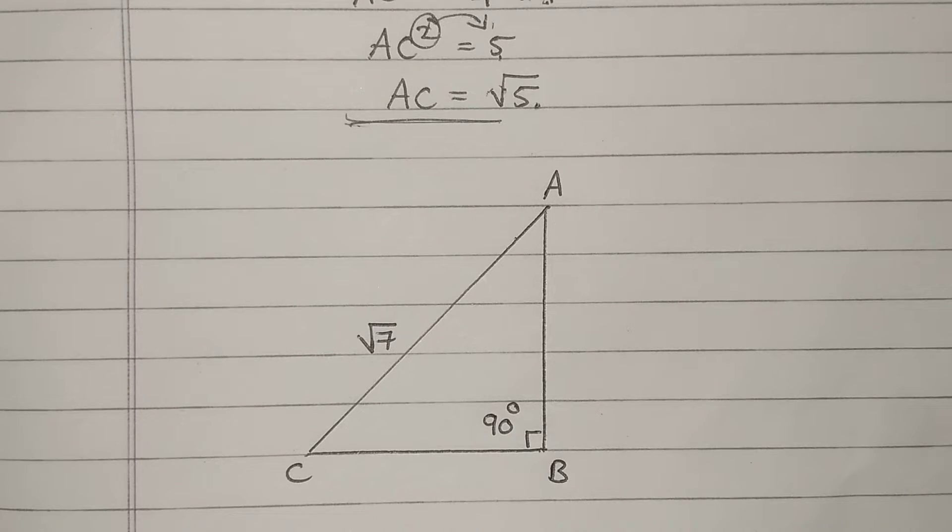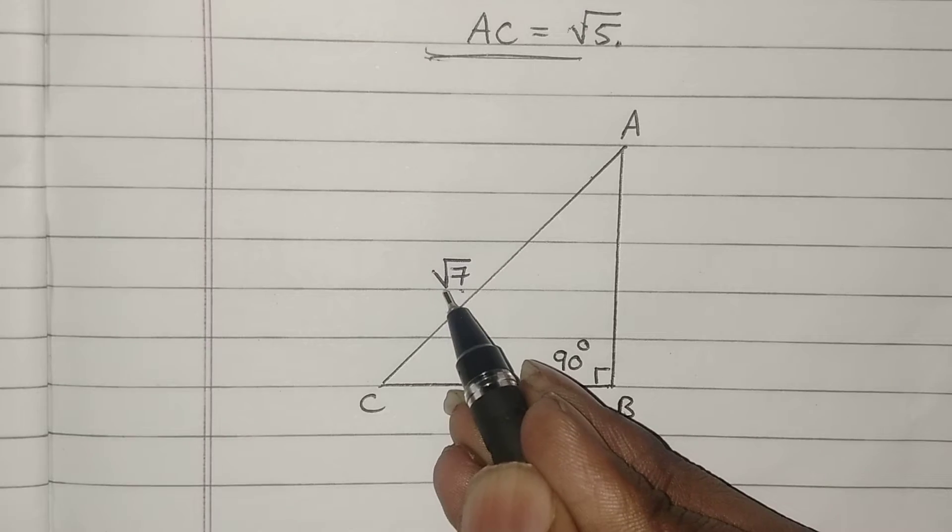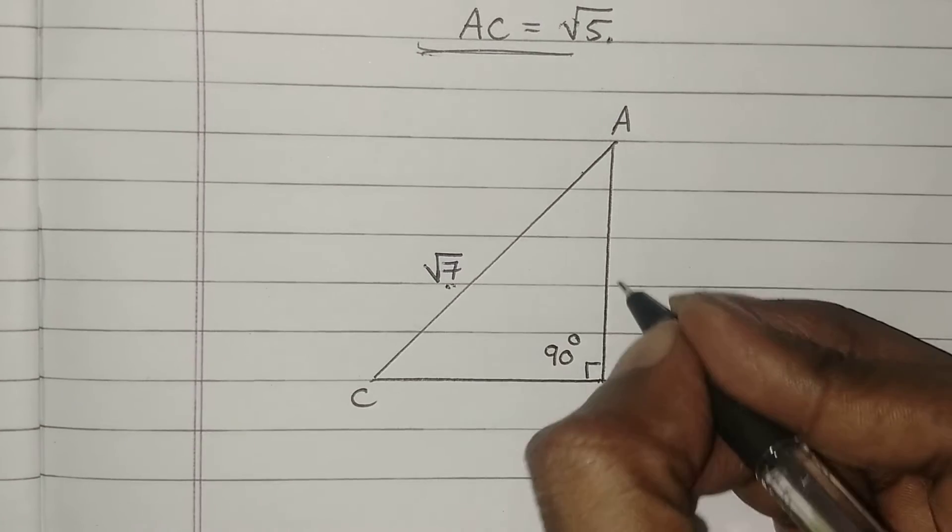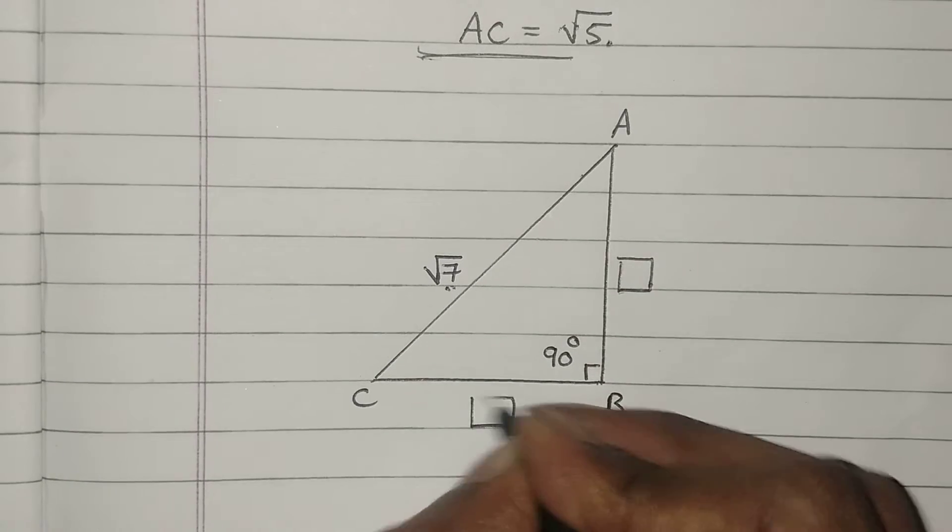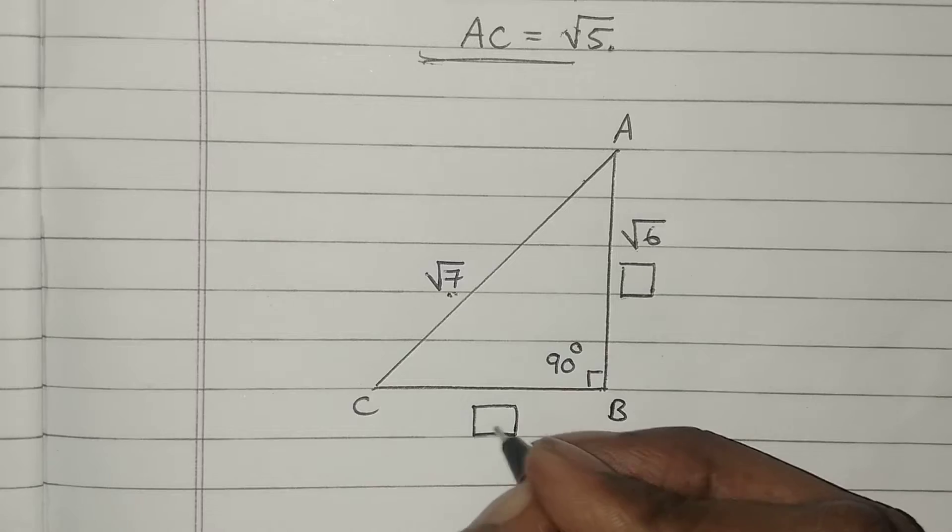If you haven't watched it, please check the description box and watch it. So in order to locate root 7 on a number line, can you guess which two numbers I can write here? Yes, you are correct. It is root 6 and 1.